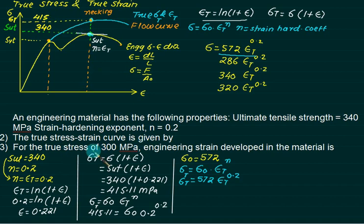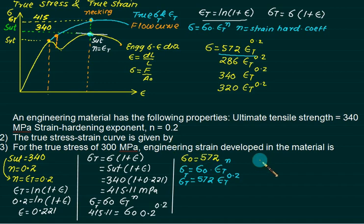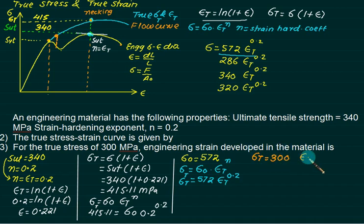Now, if the true stress sigma-t equals 300 MPa, we want to find the corresponding engineering strain epsilon. We use the flow curve law: true stress = 572 × epsilon-t^0.2. We substitute 300 and solve for epsilon-t, then convert to engineering strain.